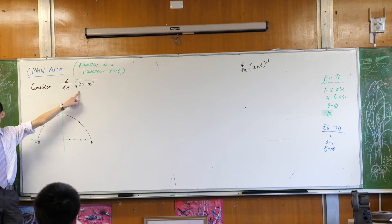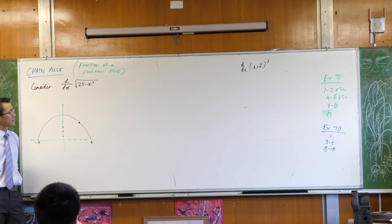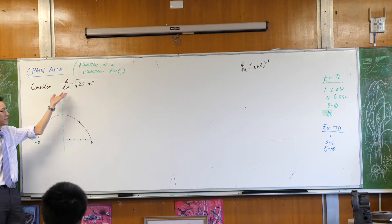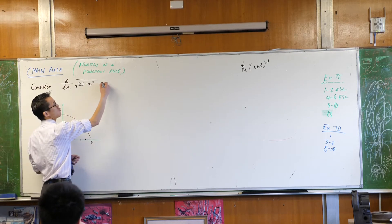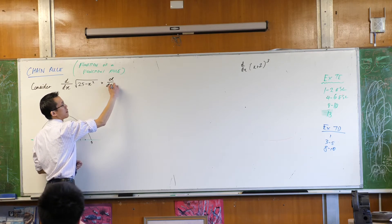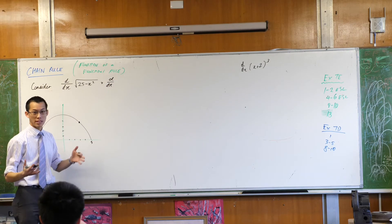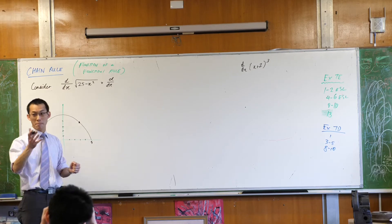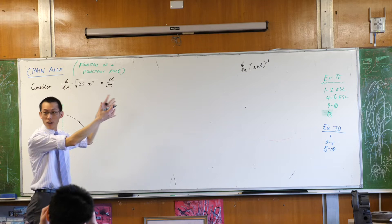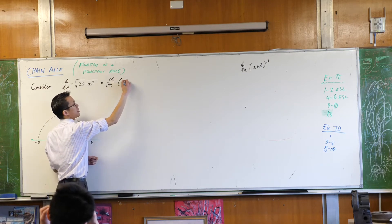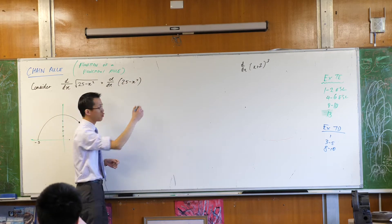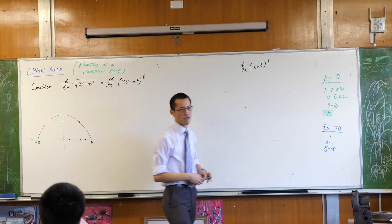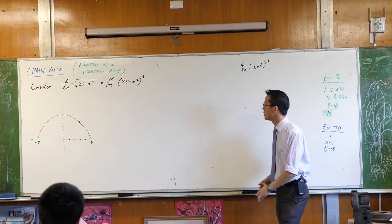Now look at this new function. There is no expanding to do — you can't expand it, there's nothing to expand. If I were to write it in index form, why would I do that? Because then I can use my rule for differentiating powers. So it becomes 25 minus x squared to the power of a half. Once you do that it becomes clear — this is not the binomial theorem, there's nothing to expand here. You're stuck.